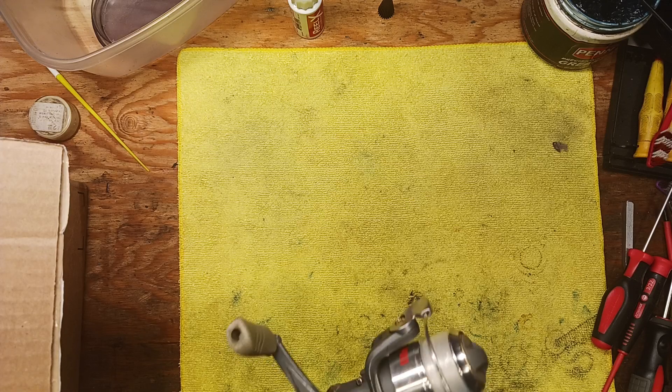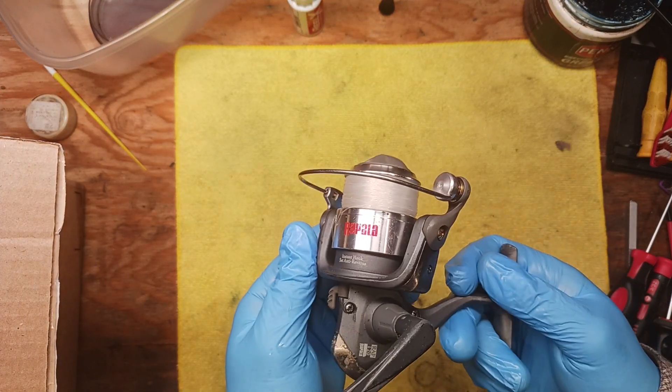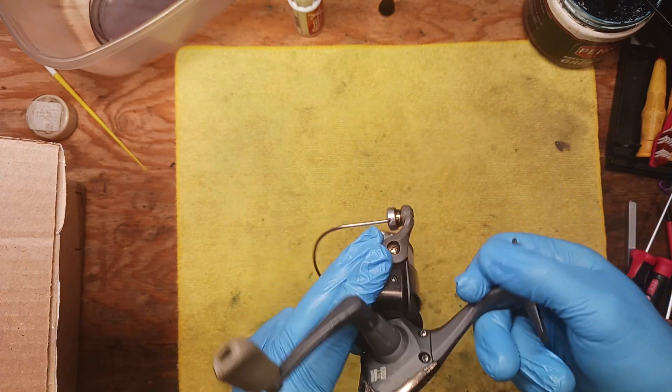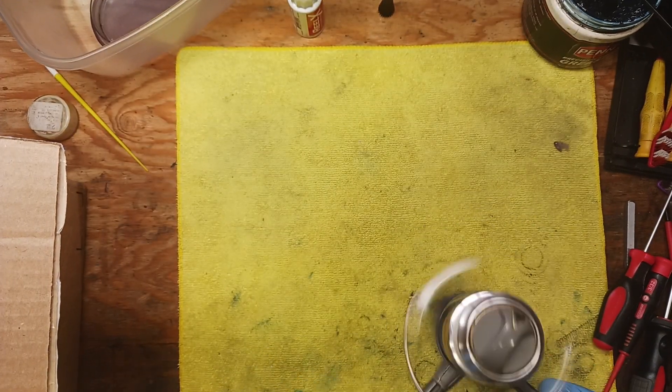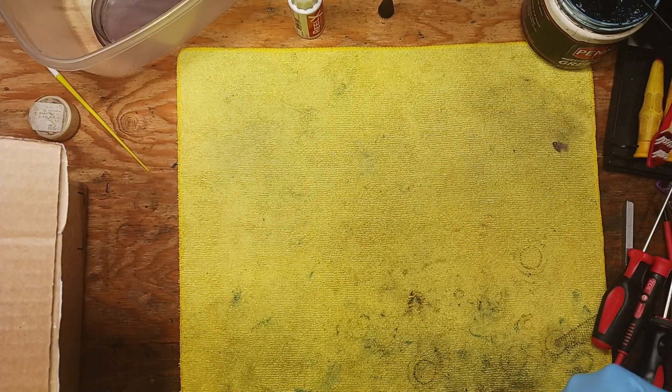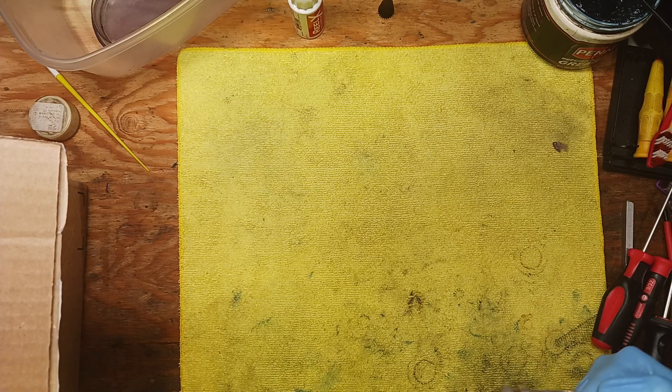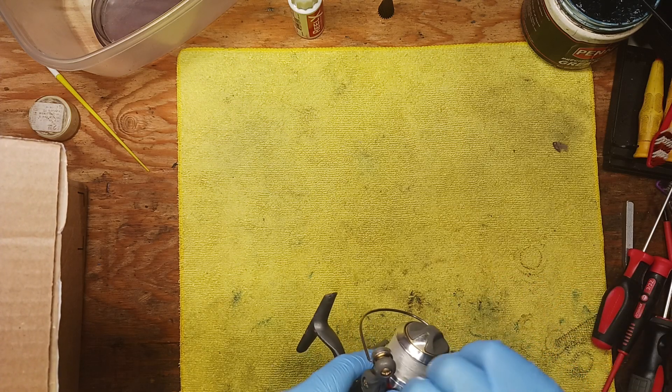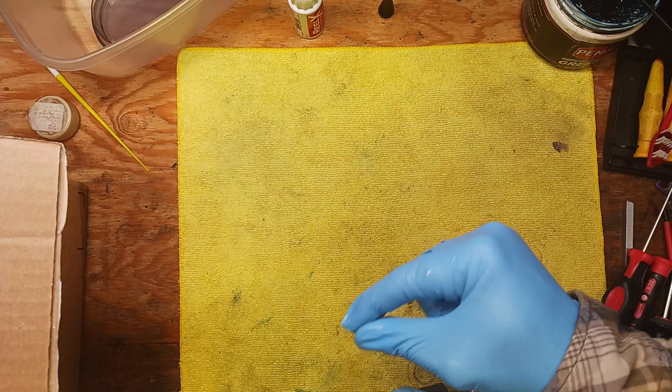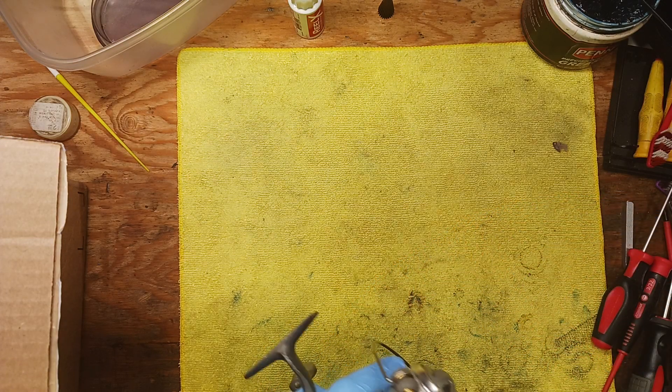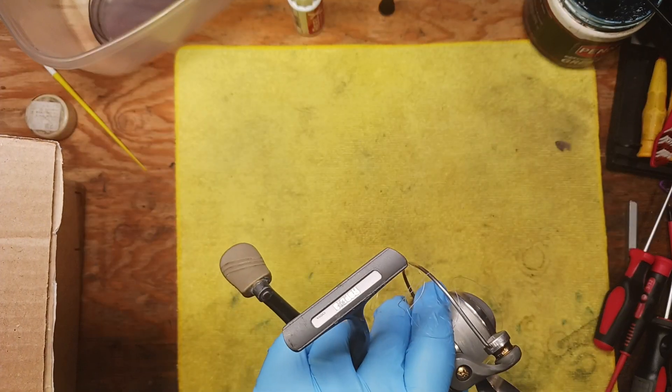First, we're looking at a Rapala combo reel. It's a little rough and dirty. It's got some line chewed up in here. One of the first things I'm going to do with all these reels is strip off all the line because it's pretty clear this line is dated. Line should be changed out frequently depending on how much the reel is being used.